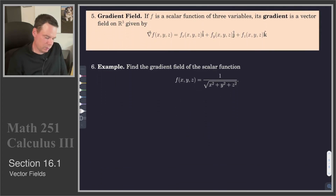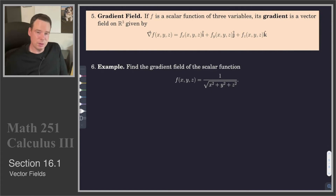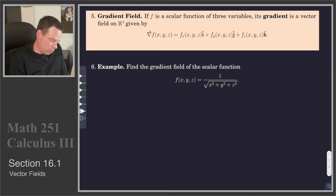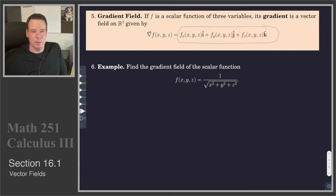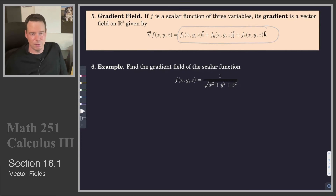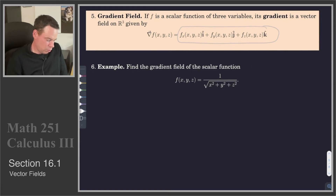It turns out we've actually been using vector fields already. Anytime we had a scalar function f and took its gradient, we produced a vector field — because the gradient of f is a function returning a vector with the partial derivatives as components: f_x, f_y, f_z. So we can construct a gradient vector field, or gradient field, for a given scalar function — doing nothing more than what we did in chapter 14.